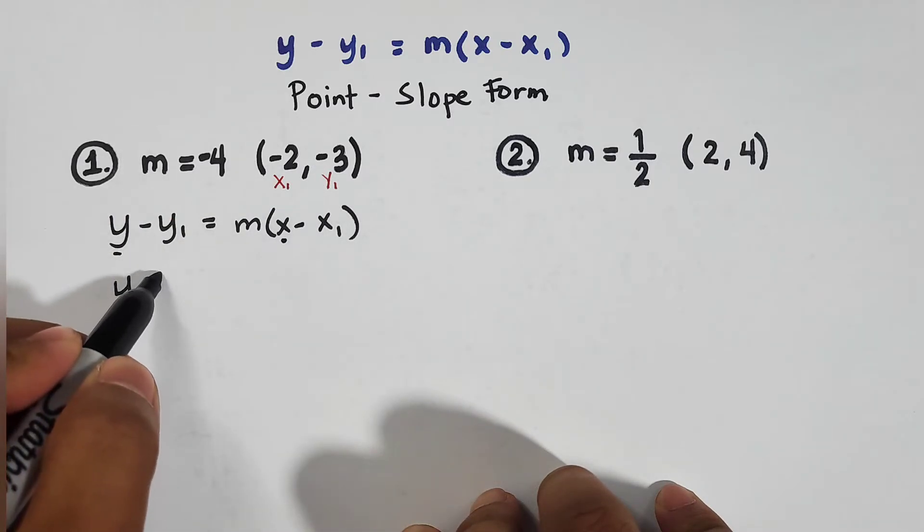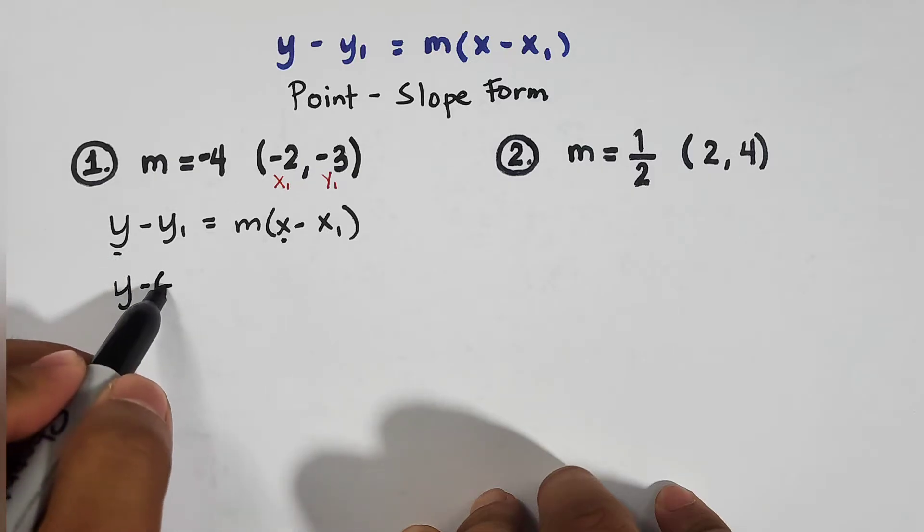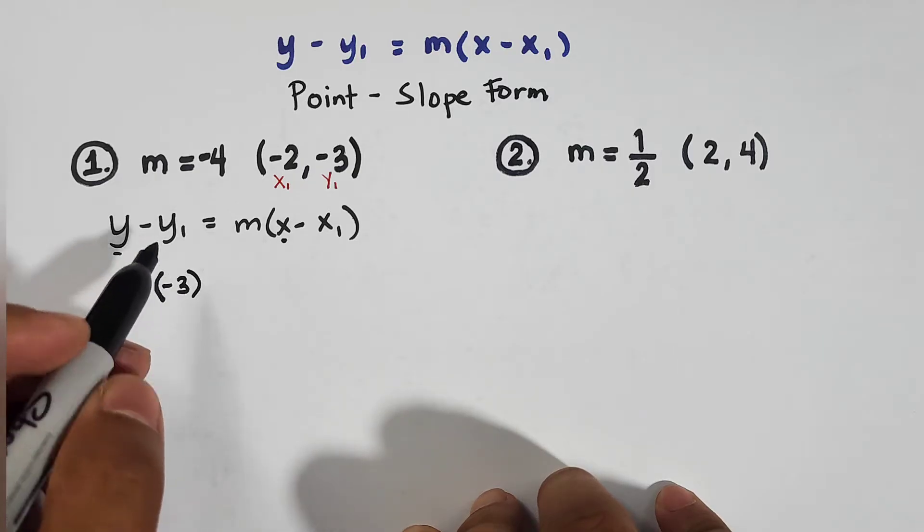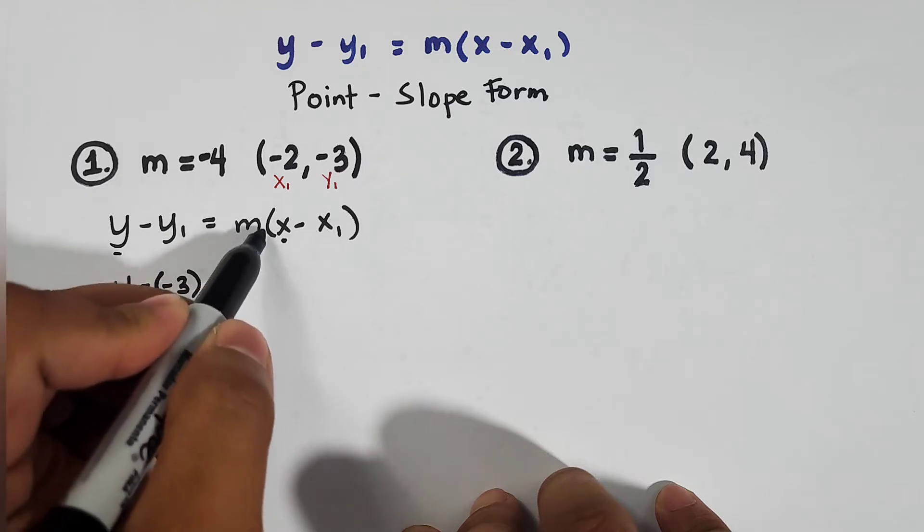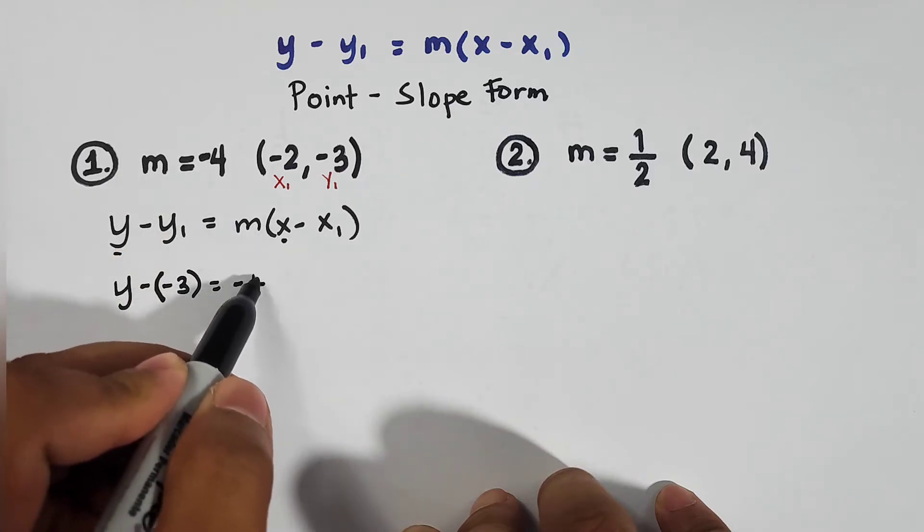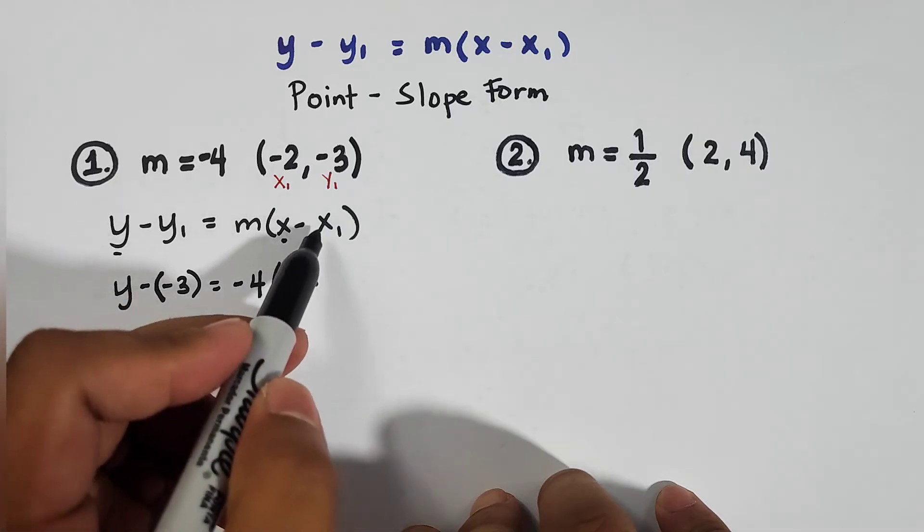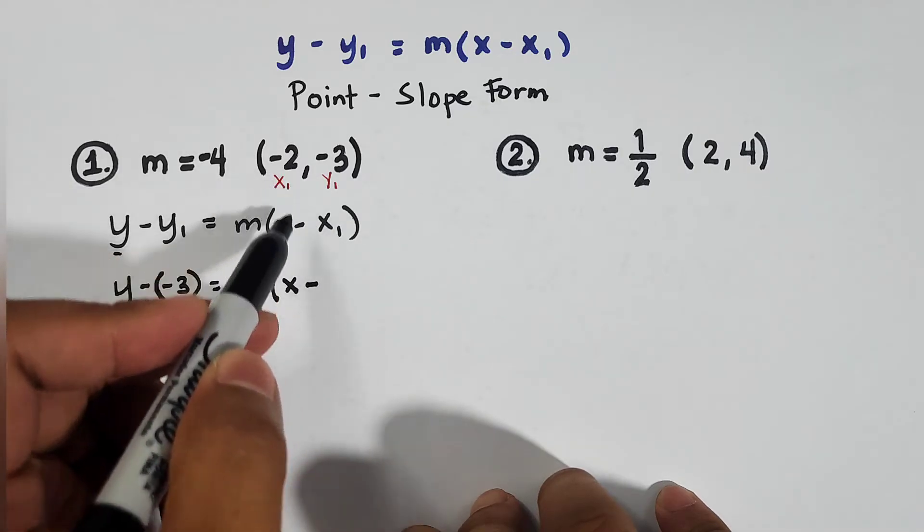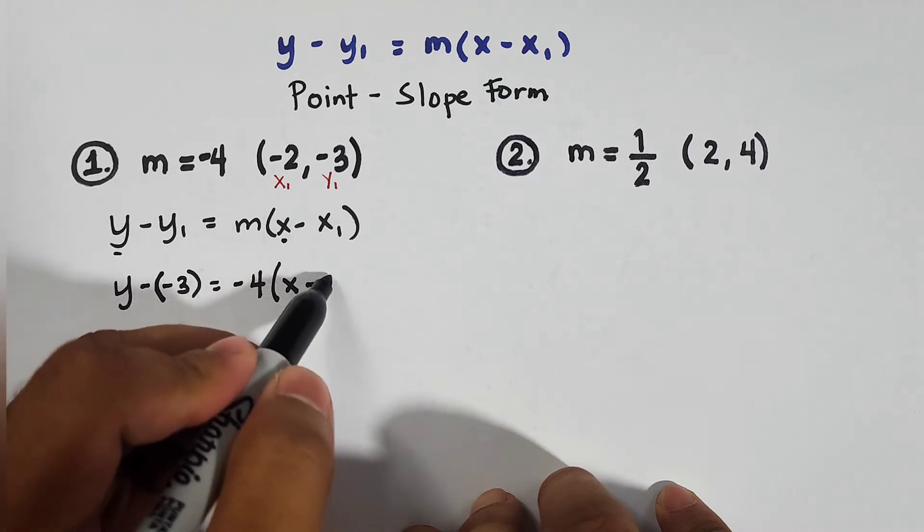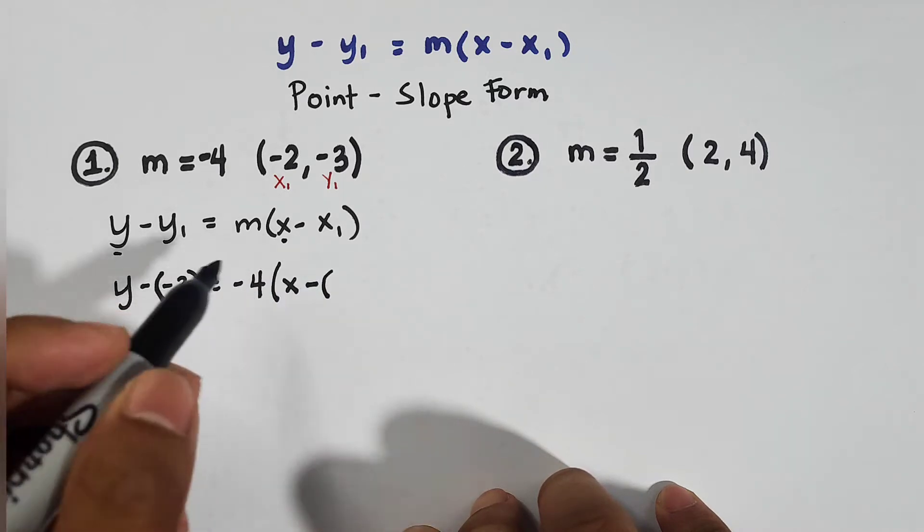Since this is negative, we will enclose it by a parenthesis. This is equal to your m, which is negative 4, times x minus. As you can see, your x sub 1 is negative 2. And close it by parenthesis.